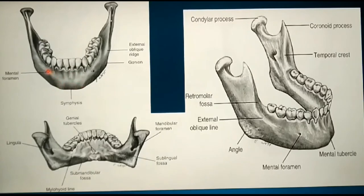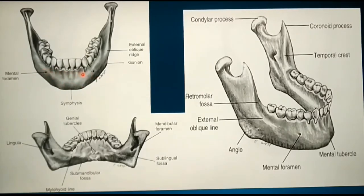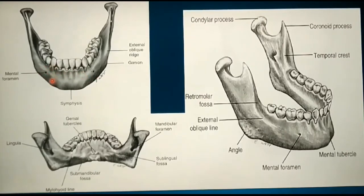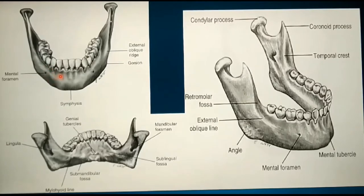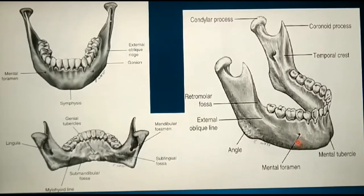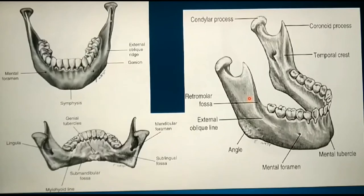The mental foramen is present on either side of the mandible, on the lateral aspect, between the roots of the first and second premolars. An oblique ridge runs from just inferior to the mental foramen, posteriorly and superiorly to the ascending ramus.